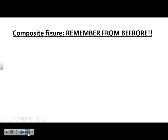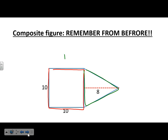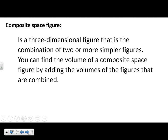Remember from before, with 2D composite shapes we found the area of each part and added them together. It's similar now, except we're in three dimensions doing volume. A composite space figure is a combination of two or more simpler figures, and you find the volume by adding the volumes of each combined figure.